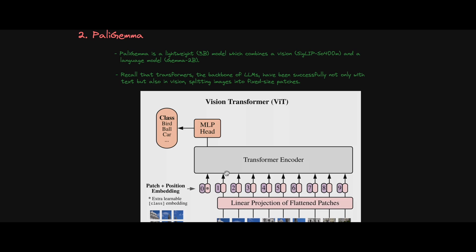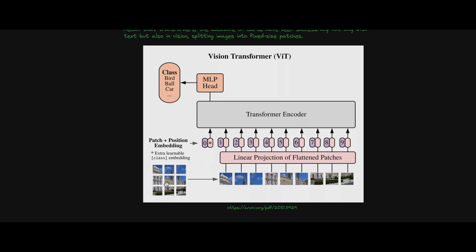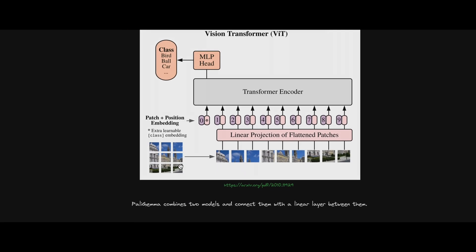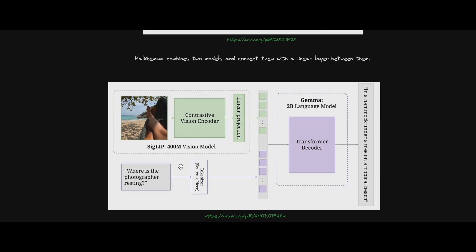Let's say you have an image of a document page. The SigLIP model extracts different patches — essentially bounding boxes — from that image. From one page it creates 1030 patches. Once those patches are built, the second stage uses PaliGemma's Gemma 2 billion language model to get the contextual meaning of those patches.